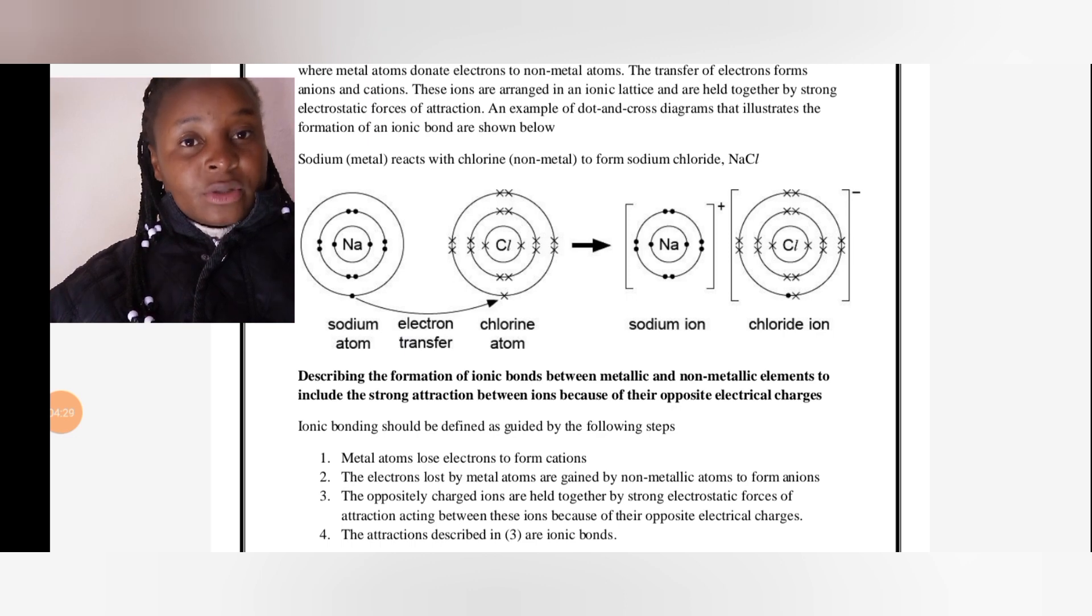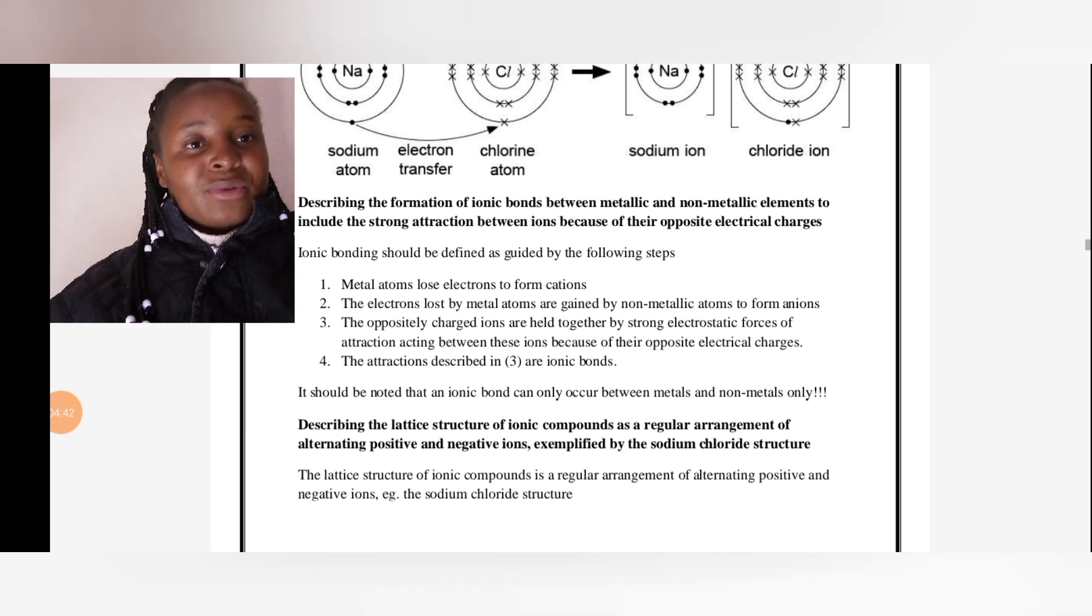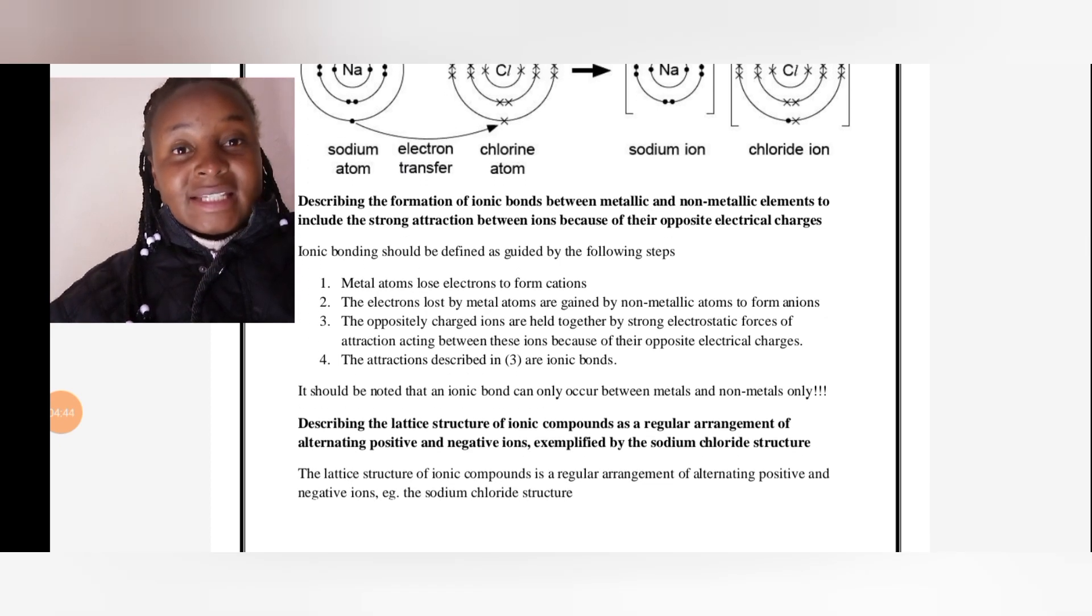We also need to describe the formation of ionic bonds between metallic and non-metallic elements, including the strong attraction between ions because of their opposite electrical charges. Ionic bonding should be defined as guided by the following steps.